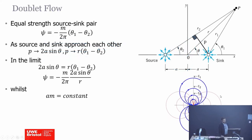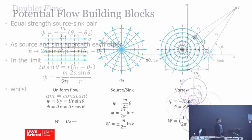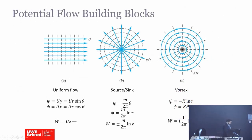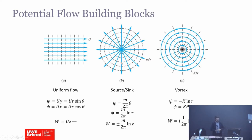We started our discussion on how to combine these models. All three satisfy the Laplace equation, which is what potential flow satisfies. But the Laplace equation is linear, which means if I combine any of these models in any manner, the result also satisfies the Laplace equation. This is a key idea about potential flow.